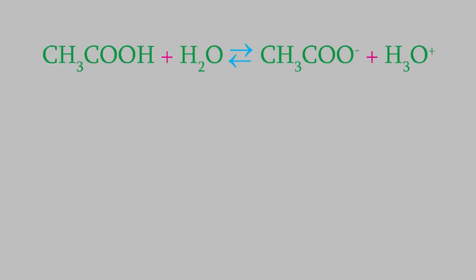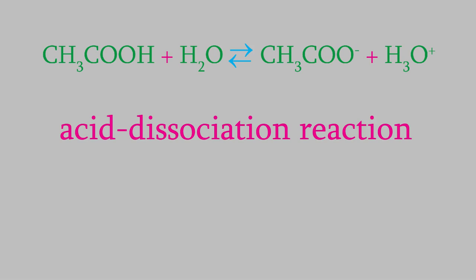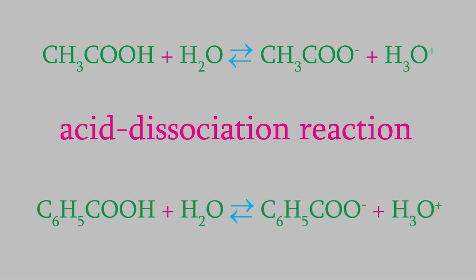This kind of reaction, in which an acid reacts with water to form hydronium and another ion, is called an acid dissociation reaction. Every weak acid reacts with water in a similar acid dissociation reaction. For example, here's the formula for benzoic acid. When we add it to water, we get this acid dissociation reaction, where the products are the benzoate ion and hydronium ion. Notice that when a weak acid dissociates, the reaction is always reversible.